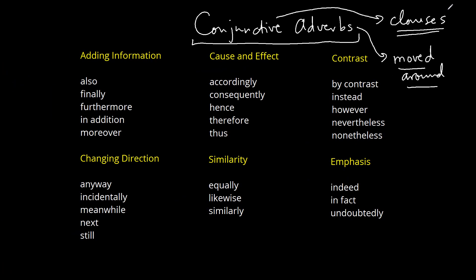I've listed quite a few of them on the screen, and I've organized them by what they're doing. Each of them is connecting clauses, but they have these patterns to them. The first category is adding information — that's a bit like saying 'and.' So we have words like 'also,' 'finally,' and so on — they're kind of suggesting that there's more information to come.